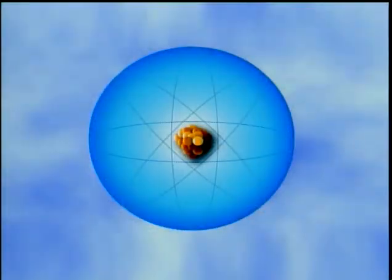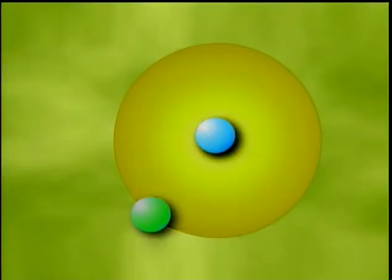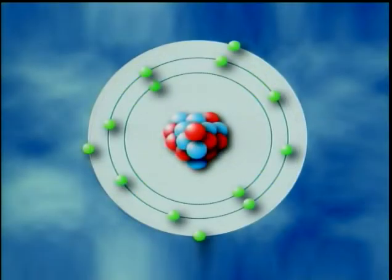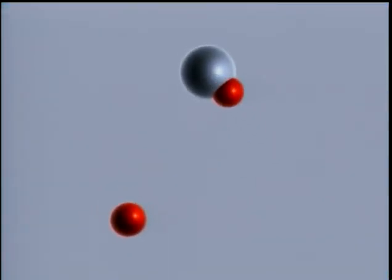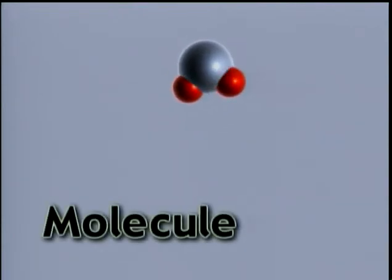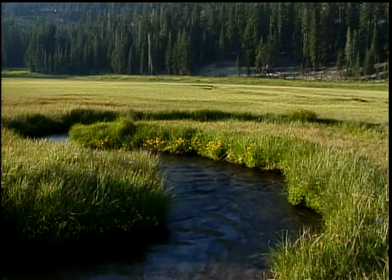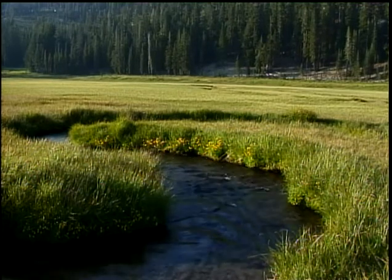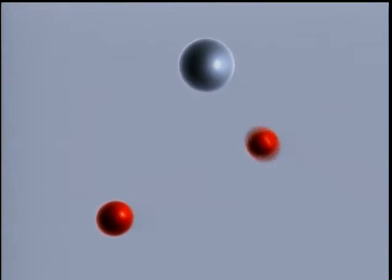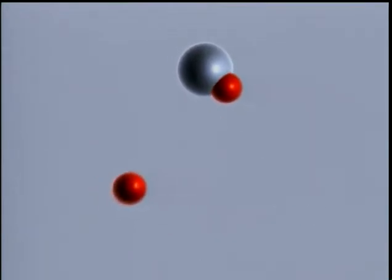While an atom, such as this copper atom, is very small, it still has all the properties of the element copper. Different types of atoms from different elements have different characteristics. In nature, it's very common for atoms to combine to form molecules. The water in this stream, for example, is made up of molecules of water. A molecule of water consists of the combination of one oxygen atom and two hydrogen atoms.